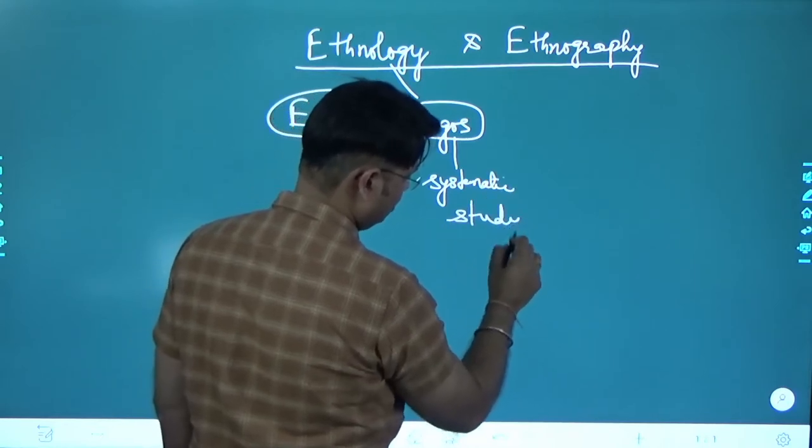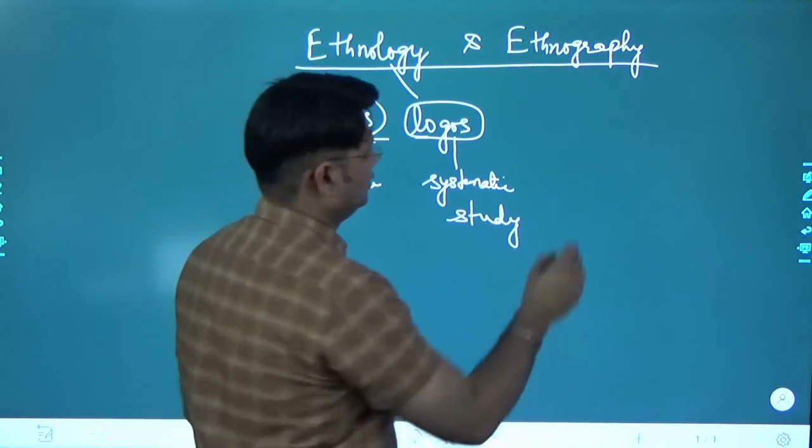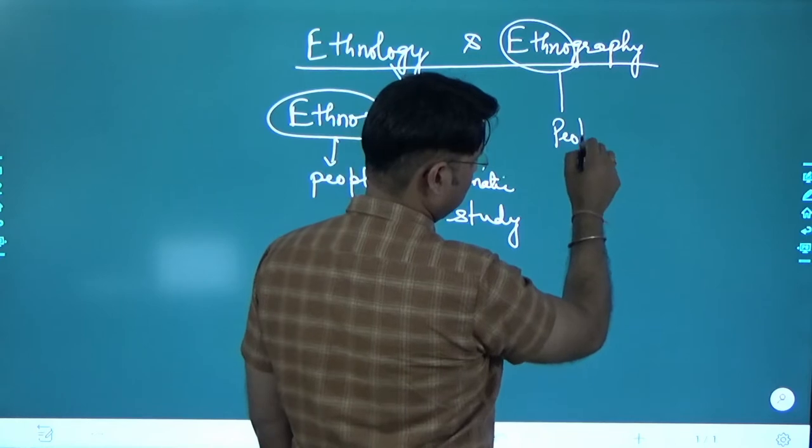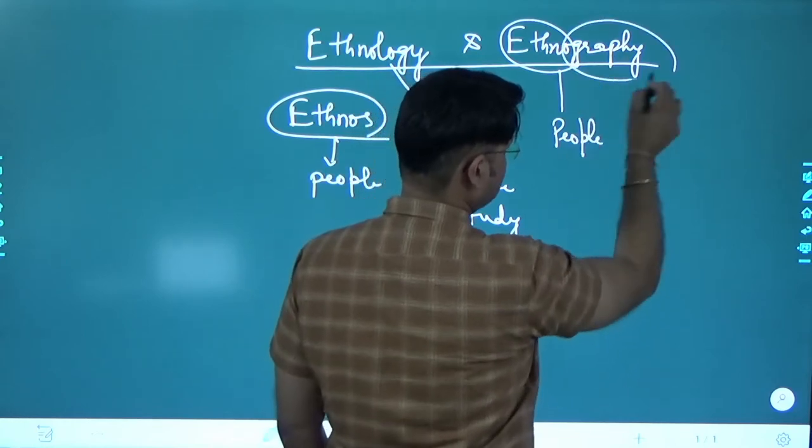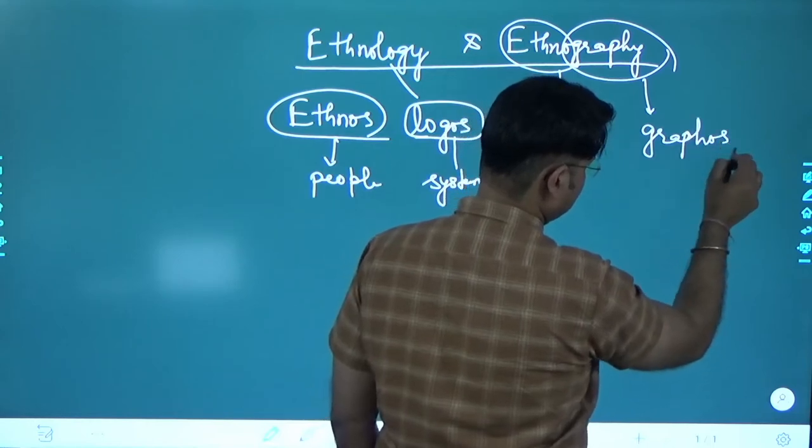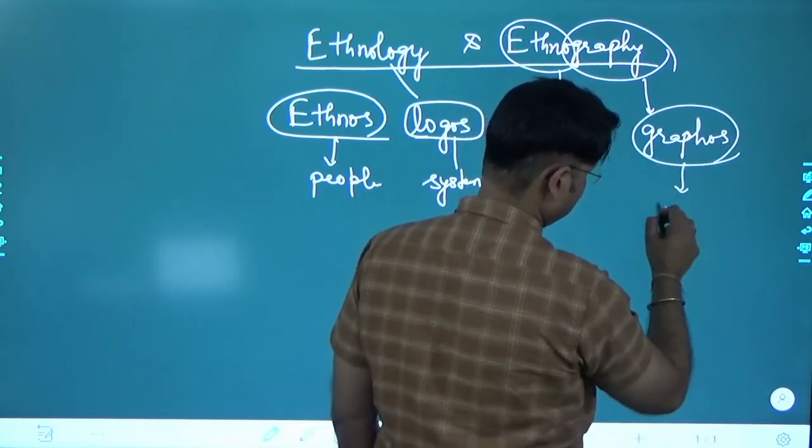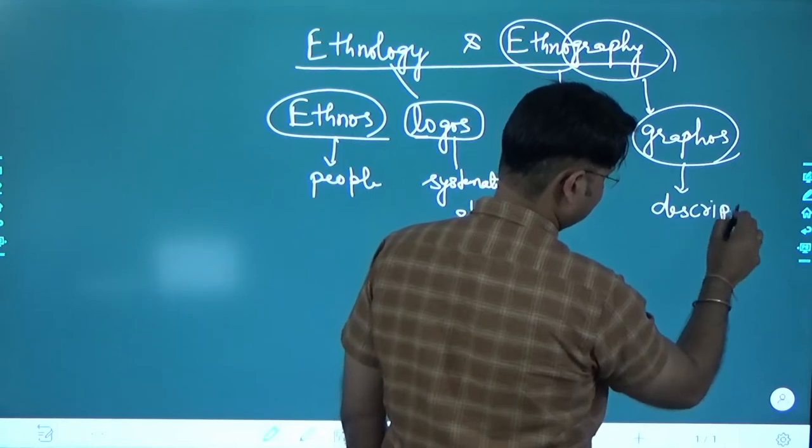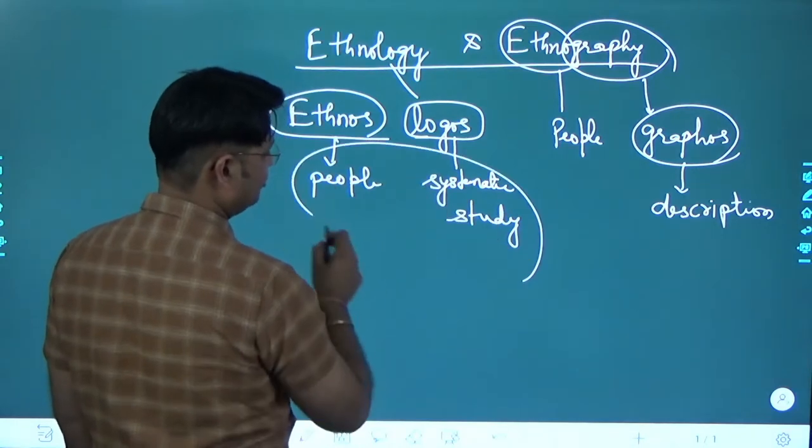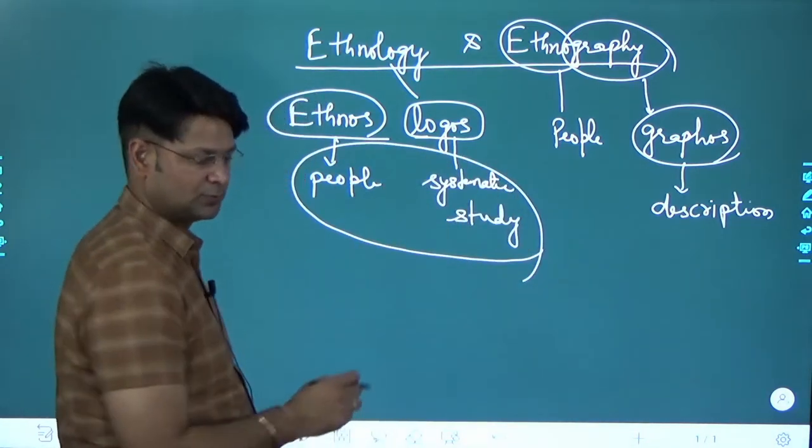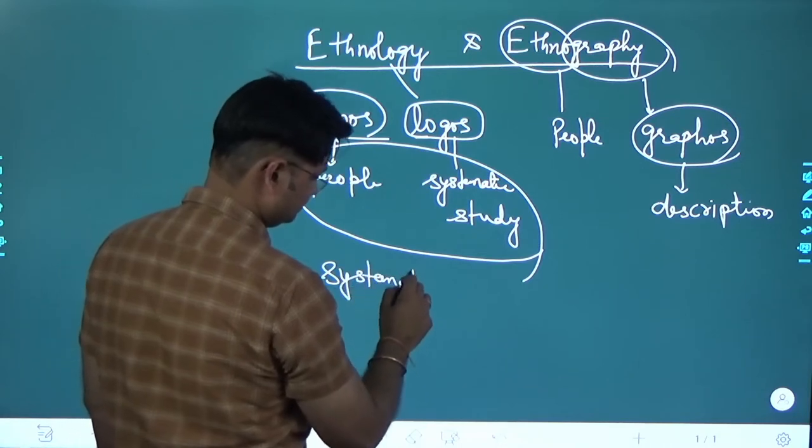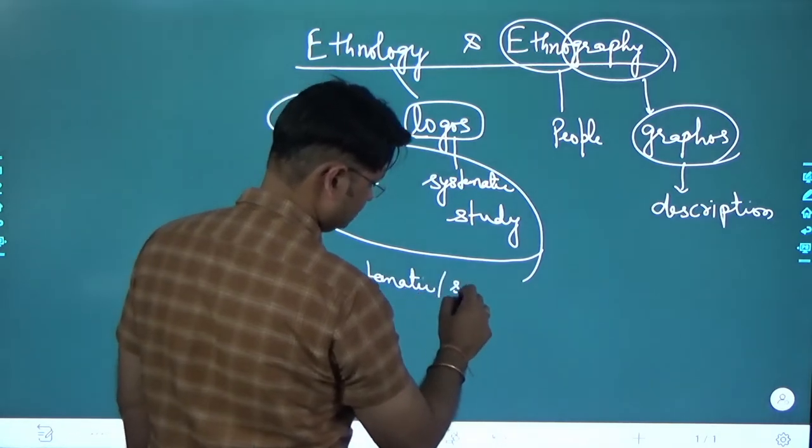On the other hand, ethnography - here again people, and graphos means description, scientific description. So it is the scientific study of people, systematic or scientific study of the people.